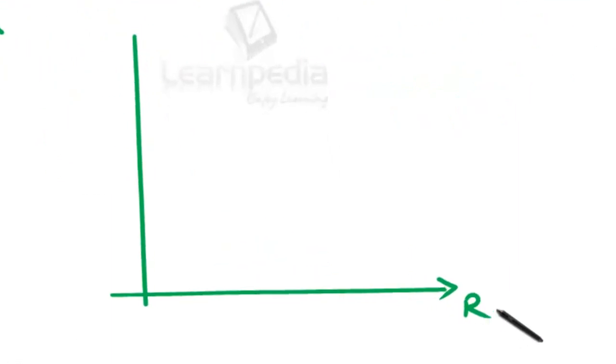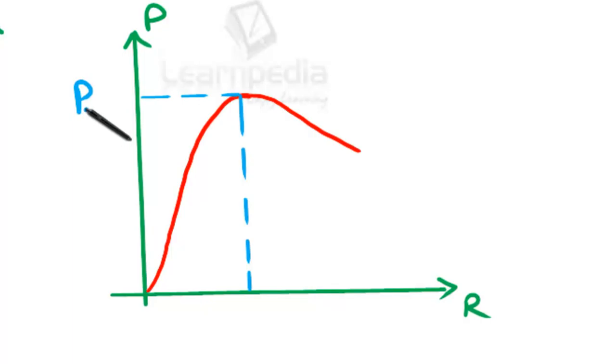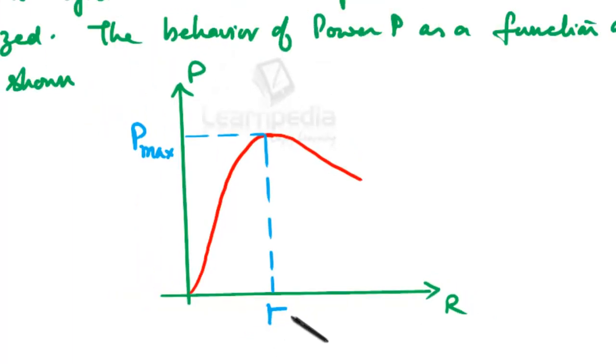Here we take resistance R. Here we take the power P. The power will increase, maximum power will be there here, and thereafter decreases. This is power maximum when R becomes equal to small r. This is the internal resistance.